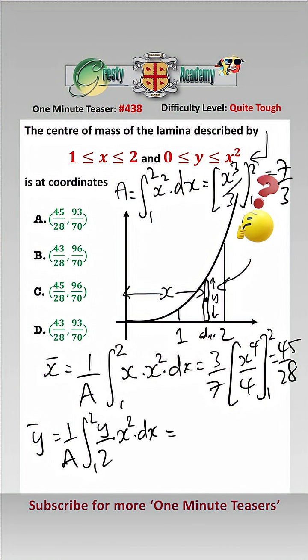Which equals 3 over 7 times the integral between 1 and 2 of x to the 4 over 2 dx and that equals 3 over 7 times by x to the 5 over 10 between 2 and 1.